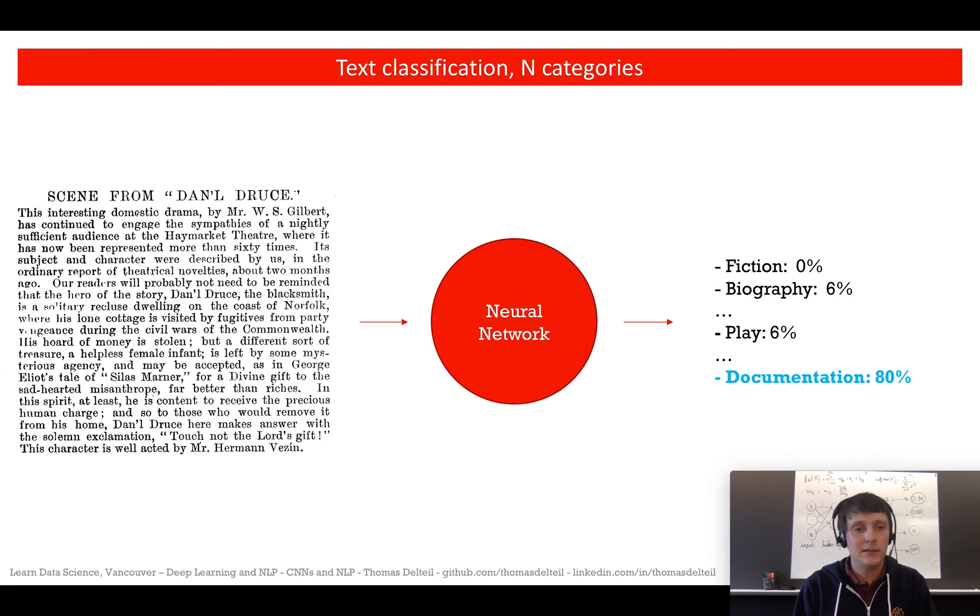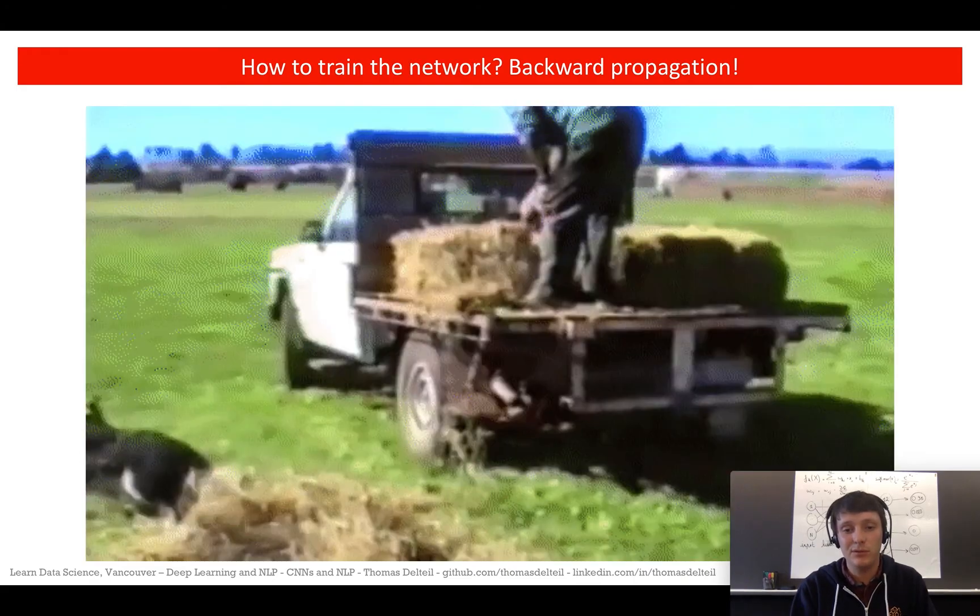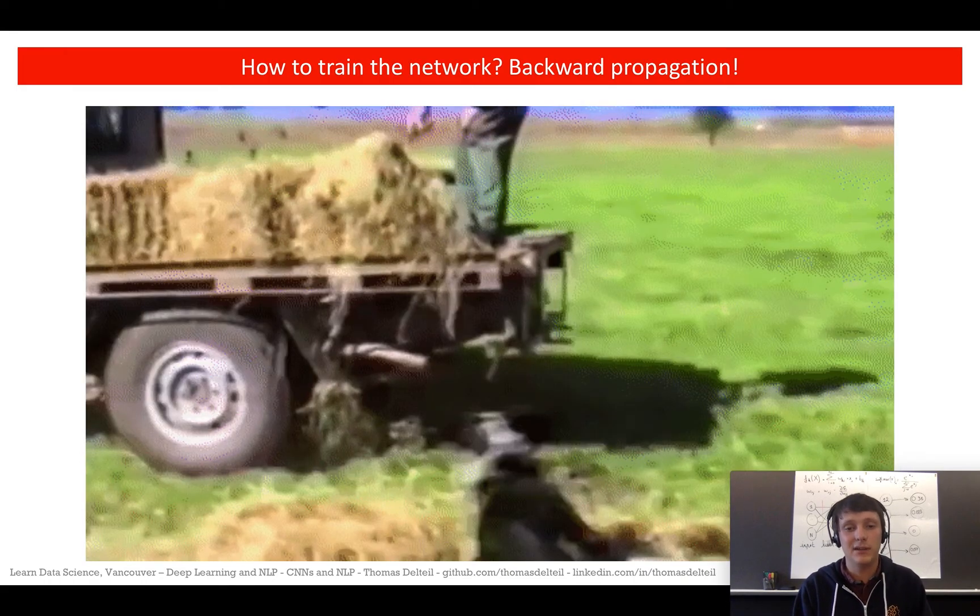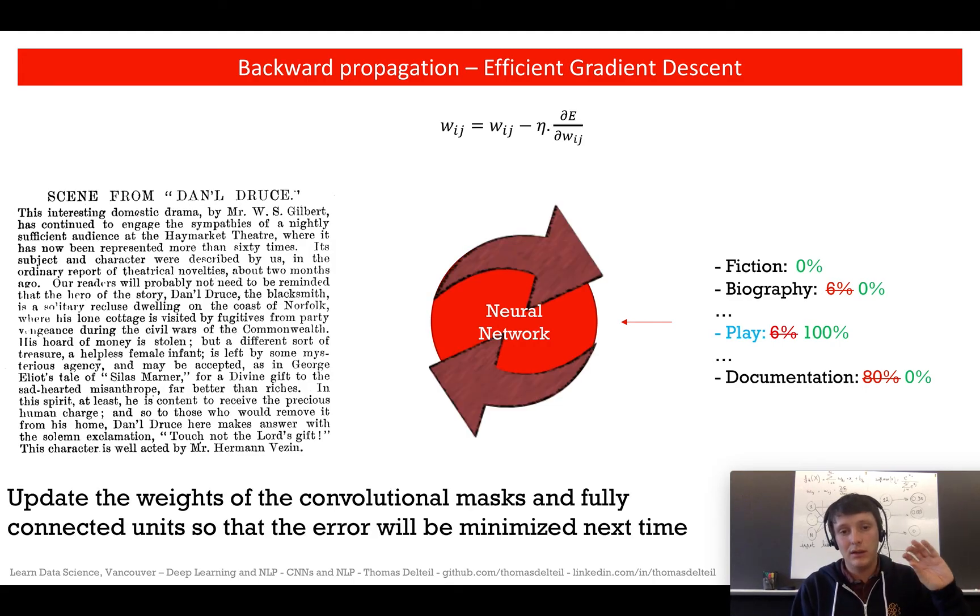So how do we train the network to give the right output? We do like the dog, we go backward and we fix everything that we did wrong. It's called backward propagation and which allows efficient gradient descent. What we want, we want to say, hey, that wasn't documentation, it should have been play. And the fact that it should have been play should have changed the weights of our last layer, and then should have changed, basically using the back propagation rule, each weight towards the direction that would have minimized the final error.